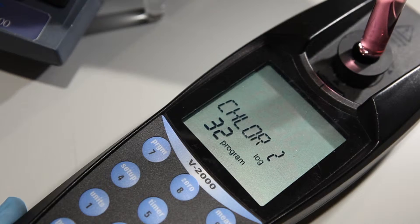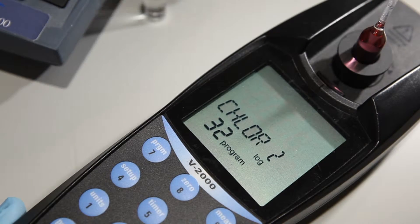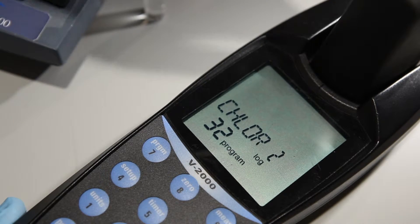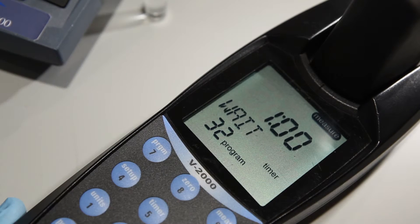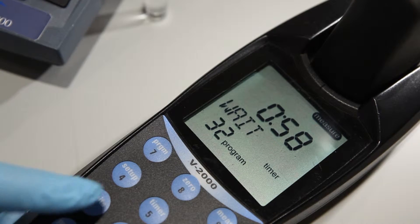Insert the Vacuvial ampule into the photometer, flat end first, and cover the test vial with the shield. Press the measure or start enter key to obtain results in parts per million.